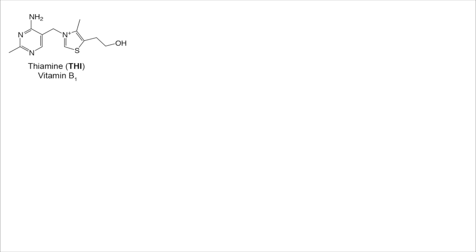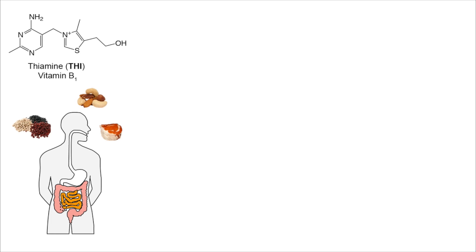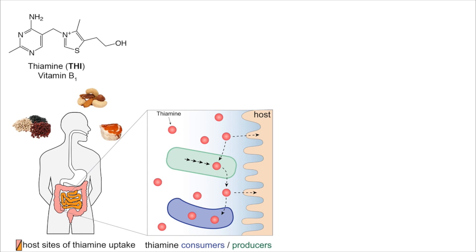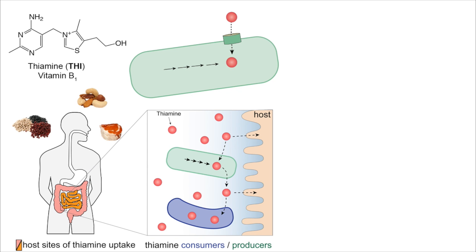Thiamin is an essential cofactor utilized in carbohydrate and amino acid metabolism. Humans primarily acquire thiamin from their diet, but there is evidence that the human microbiota also contributes to the available thiamin pool. Building on that, we utilize B-theta to investigate the importance of thiamin biosynthesis and transport among gut microbes.